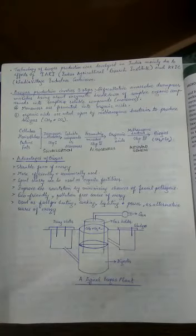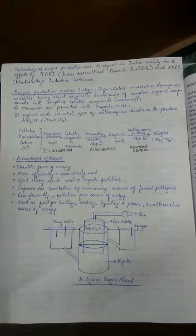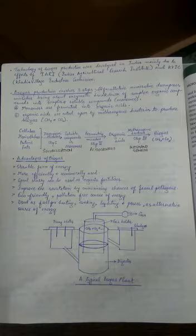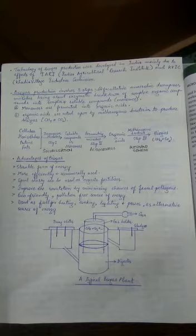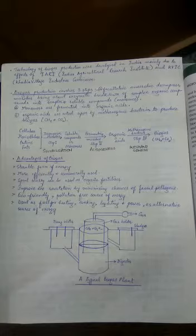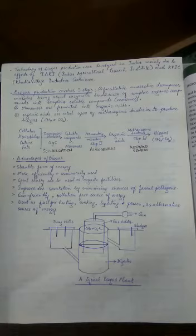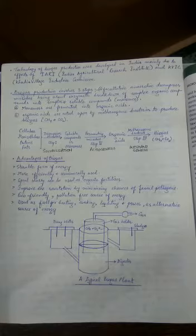The three steps are solubilization, acidogenesis, and methanogenesis. Solubilization converts complex organic compounds into simple compounds or monomers. The second step converts monomers into organic acids, generally acetic acid, by fermenting microorganisms. The first step is done by facultative anaerobic decomposers, and the second step by fermenting microorganisms.